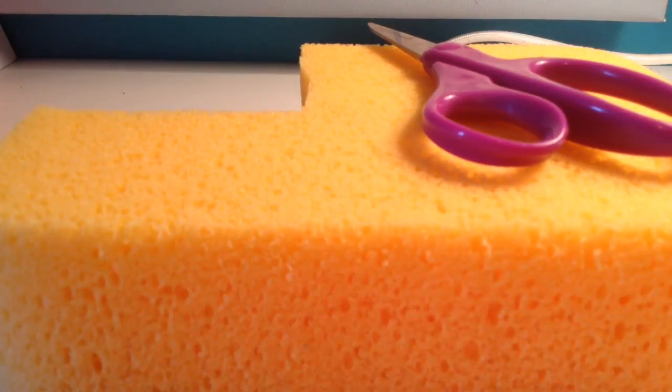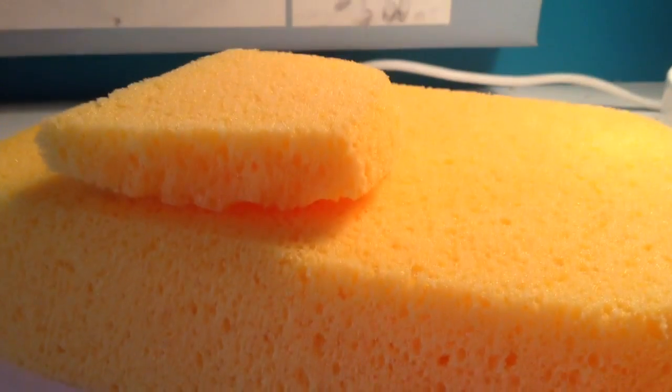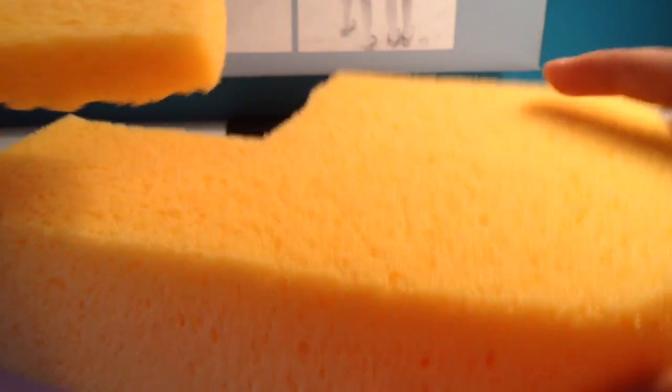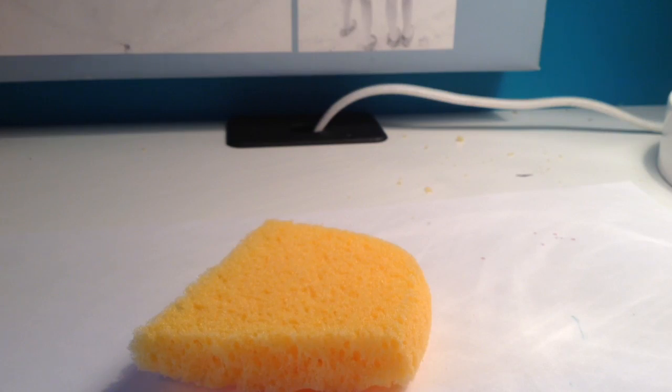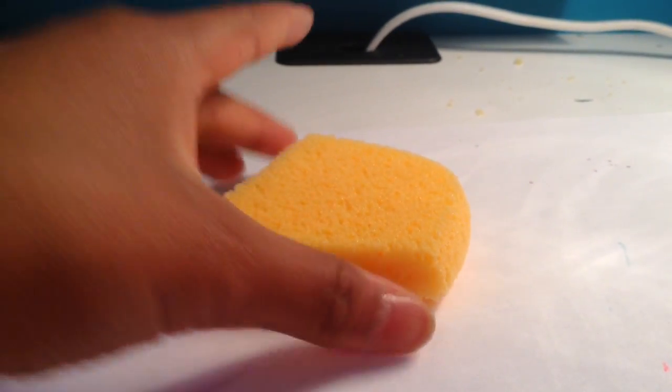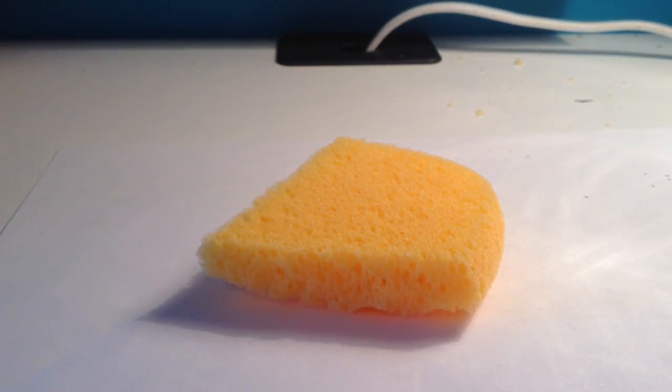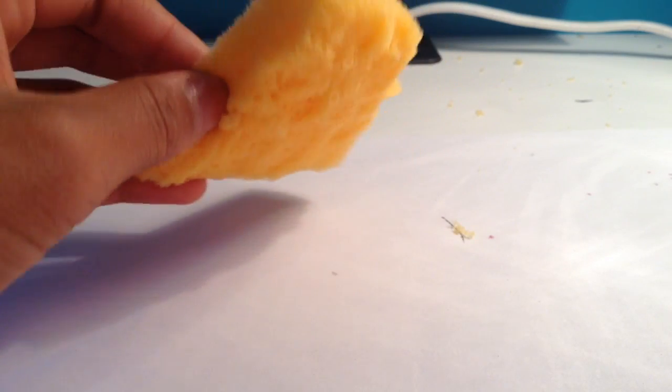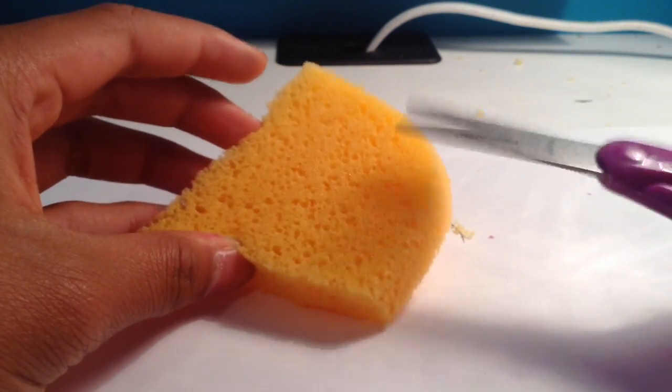So for this craft, you're going to need a sponge, scissors, and markers. So first, I'm just going to cut out a little square or triangle looking thing. And I'm making a watermelon - you can make whatever you want - but for this specific craft, I am just going to shave the sponge until I like it.